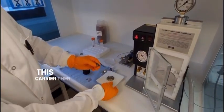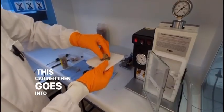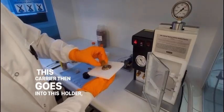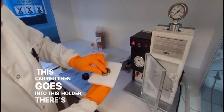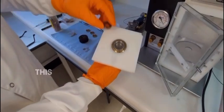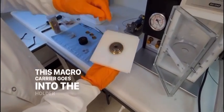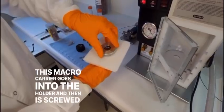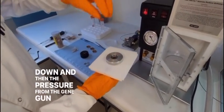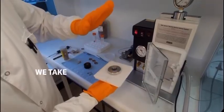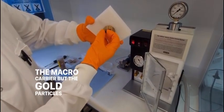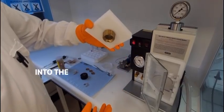This carrier then goes into this holder. There's a small stop screen in there. This macro carrier goes into the holder and is then screwed down and then the pressure from the gene gun will push down, take the macro carrier. The stop screen will actually stop the macro carrier but the gold particles will continue on and into the plant material.